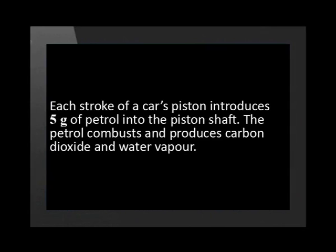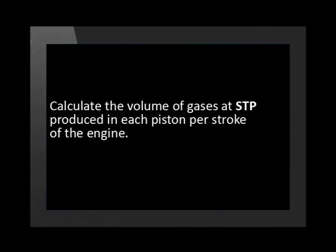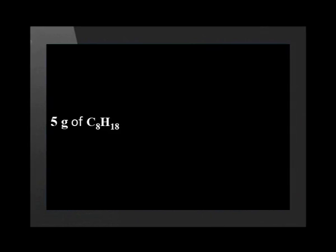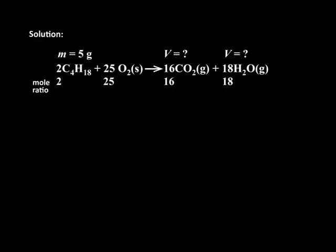Each stroke of a car's piston introduces about 5 grams of petrol into the piston shaft. Let us calculate the volume of gases produced in this combustion reaction. We have 5 grams of petrol, which has the formula C8H18. We want to determine the total volume of gases produced. From the balanced equation, we determine the mole ratio, which will be 2 : 25 : 16 : 18.